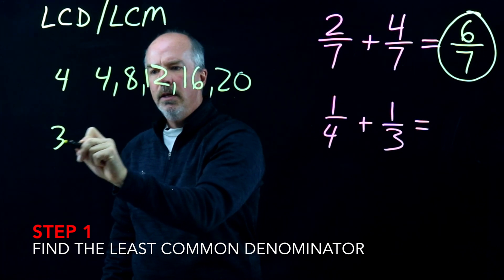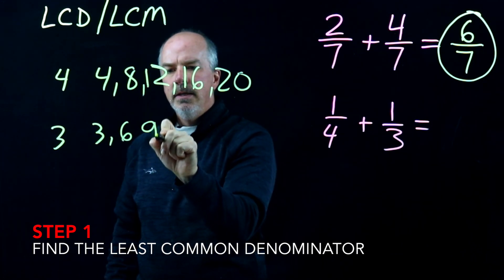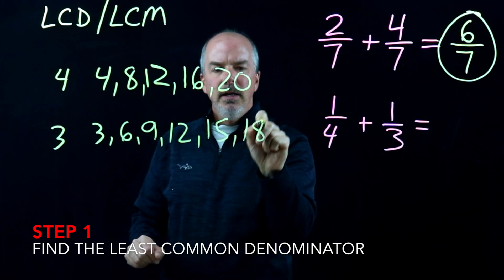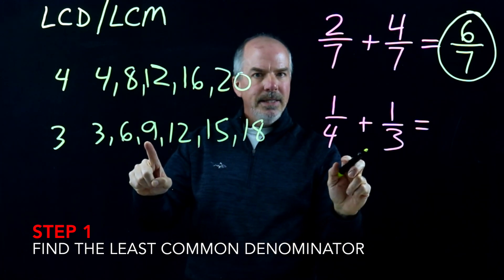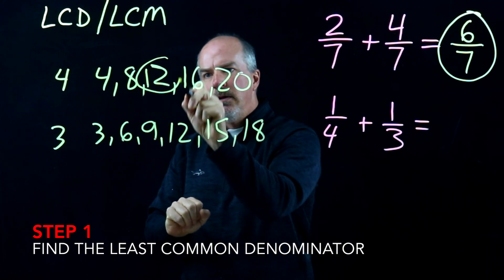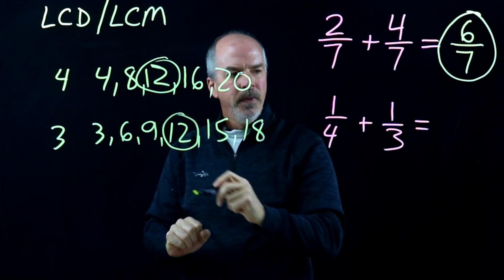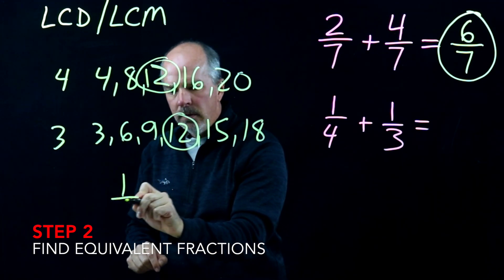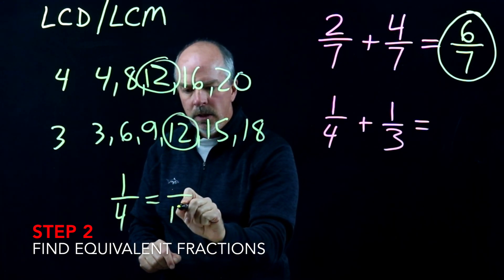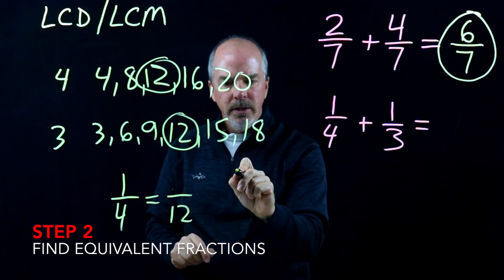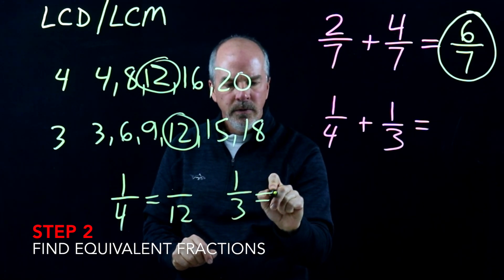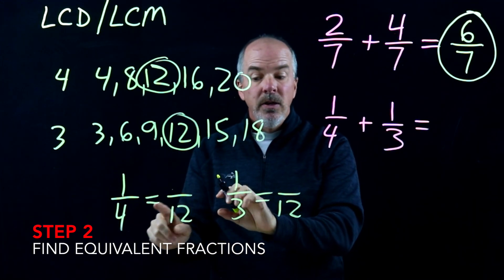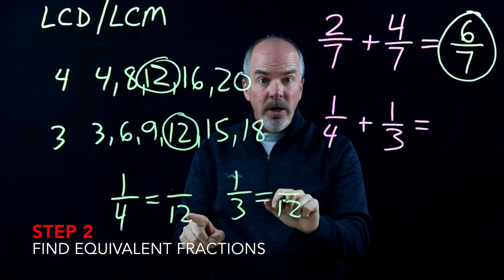Multiples of 3: 3, 6, 9, 12, 15, 18. If I look, I can see that my least common multiple that they both share is 12. So I need to change 1/4 to something over 12, and I need to change 1/3 to something over 12. I've found my least common multiple; now I need to create equivalent fractions where we both have a denominator of 12, and then we can add them.